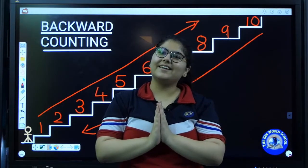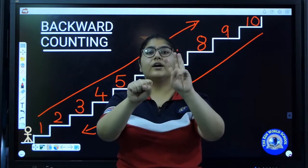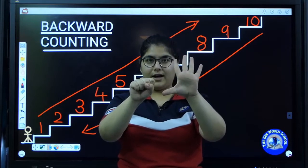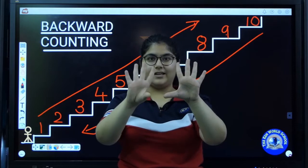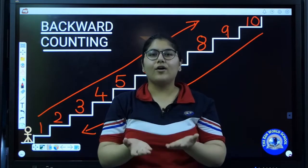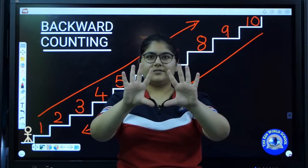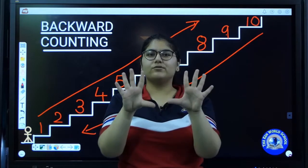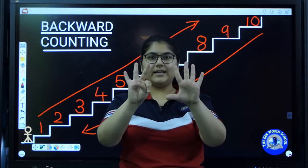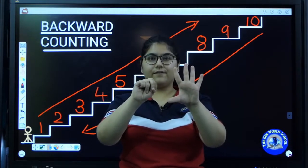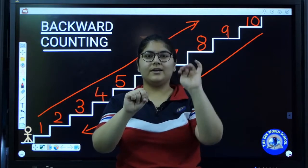Let us practice again. Make two fists. One, two, three, four, five, six, seven, eight, nine, ten. This is called the forward counting. Let us count the backward counting: ten, nine, eight, seven, six, five, four, three, two, one, zero. Now you all have learned the backward counting. Yay!